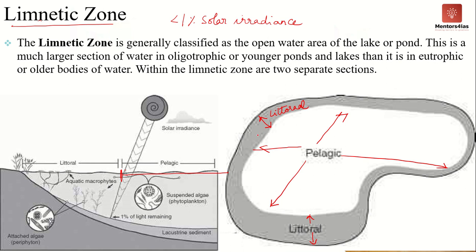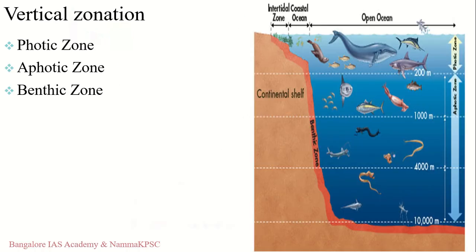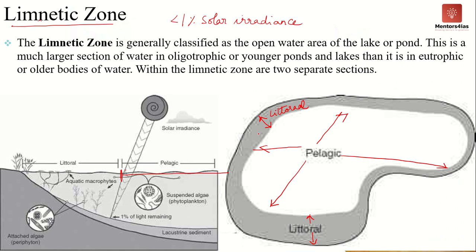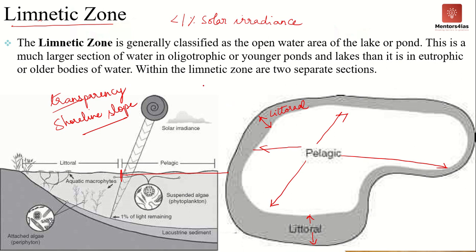The extent of the littoral zone depends on two things: the transparency of water and the shoreline slope. If the water is turbid — has suspended particles or biomass — then the littoral zone will be restricted.